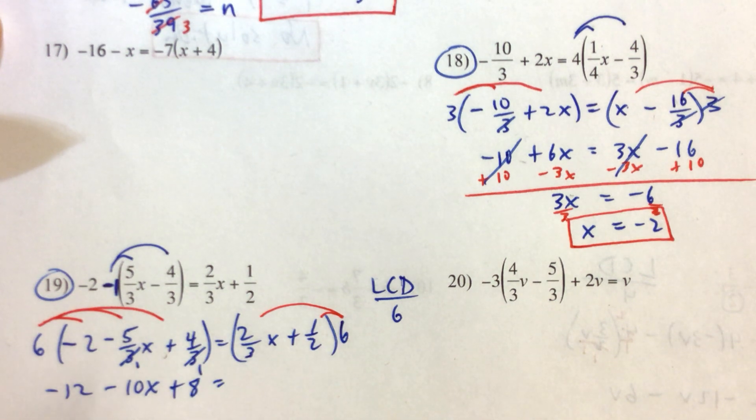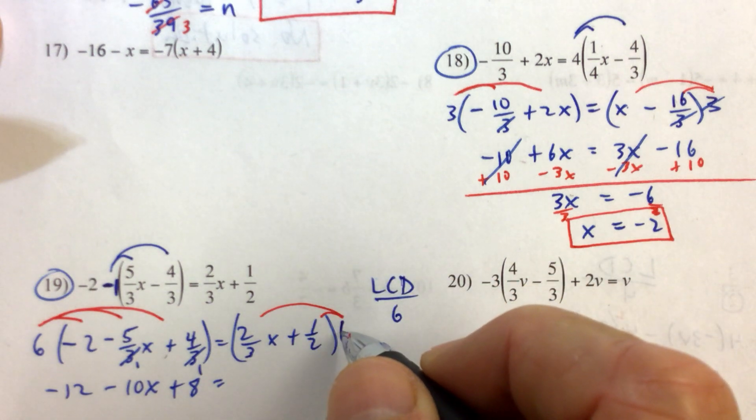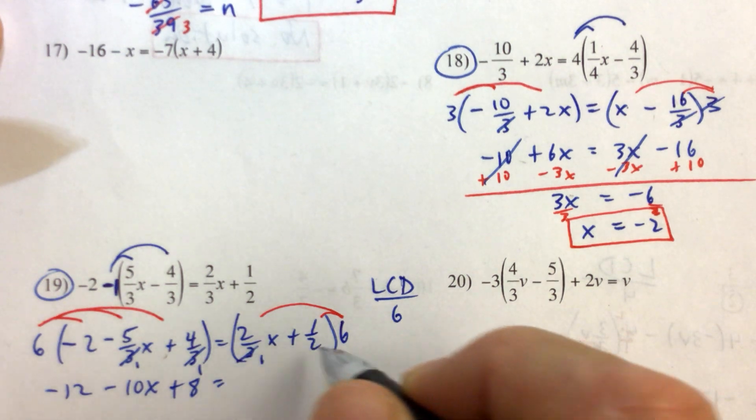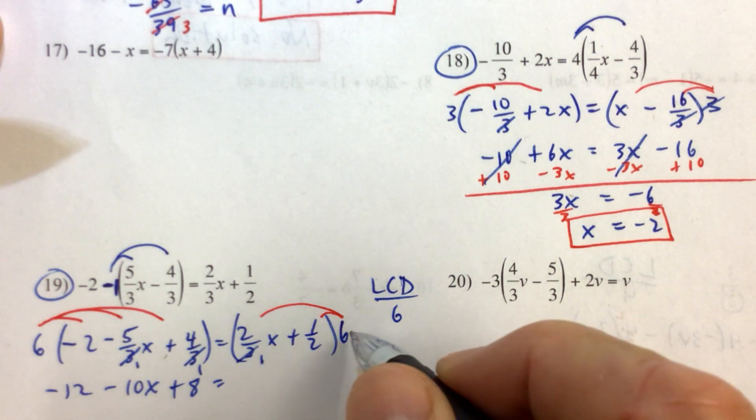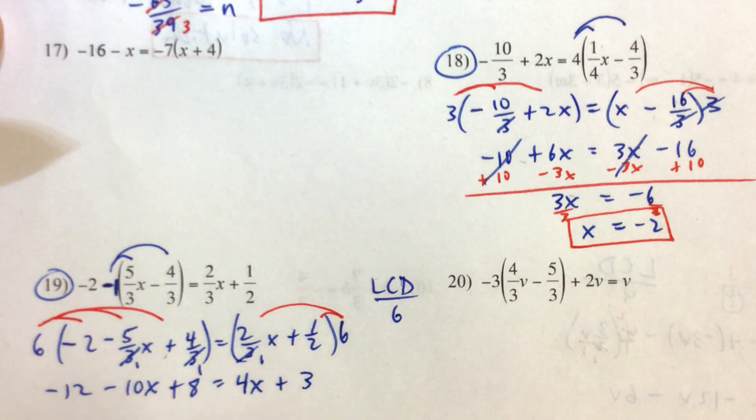If you're going to practice one problem of all of the problems that we've covered so far in these videos, this would be the one that's got a little bit of everything in it. So anyway, back to the problem. 6 times 2/3 x. 3 goes into 3 once. 3 goes into 6 twice. 2 times 2x is 4x. 1 half of 6 is 3. So that really simplifies things.